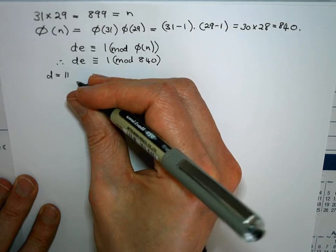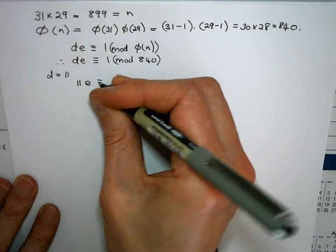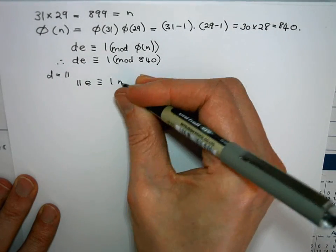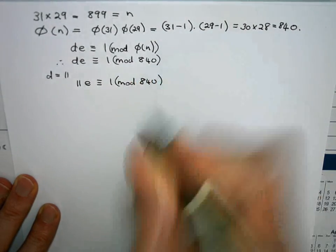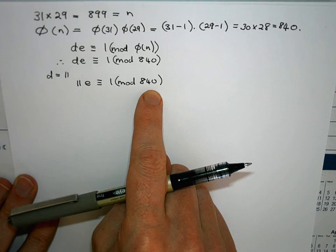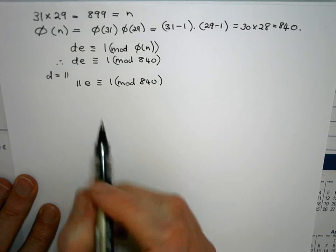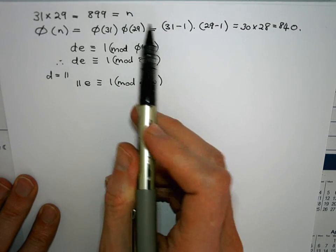So in other words you want to go and solve this linear congruence. You need to find a value for e which satisfies that.